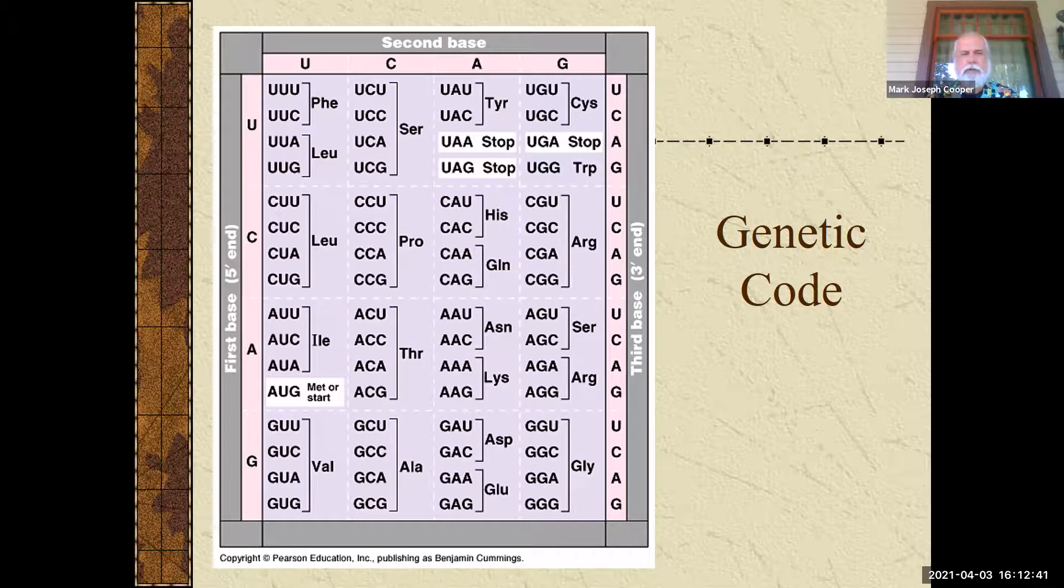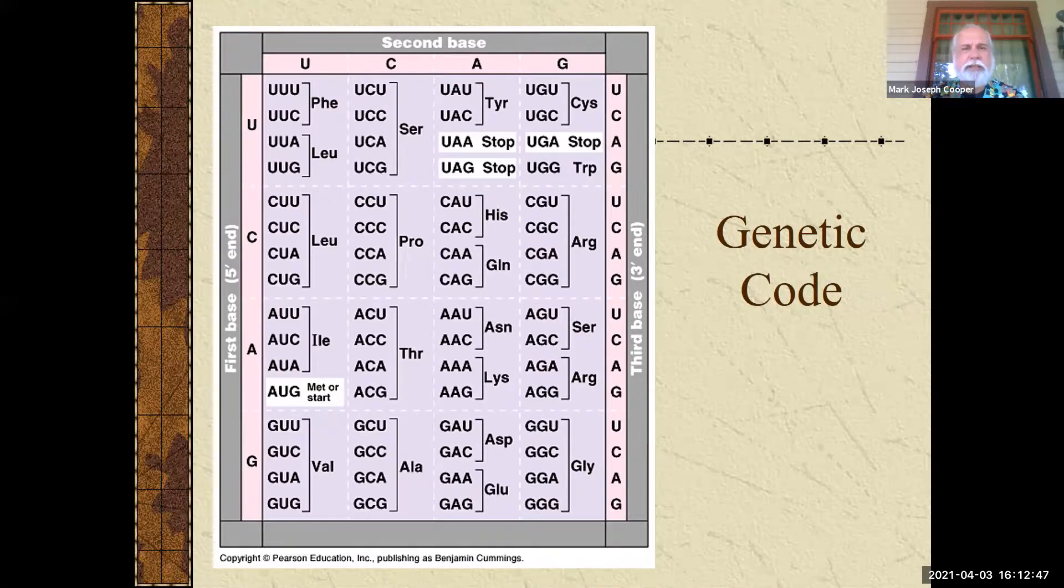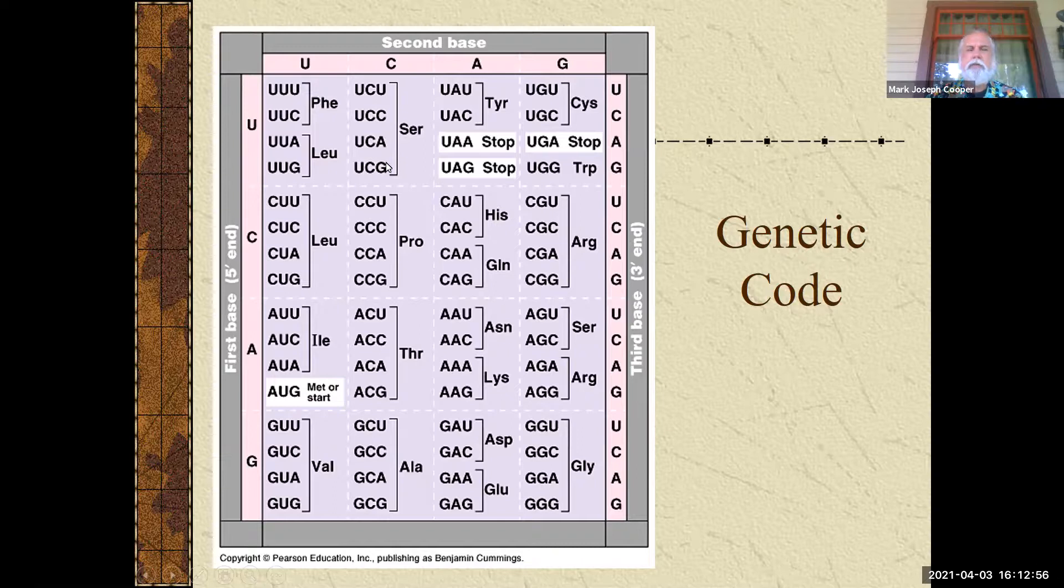Alright, what else do I need you to know? I also need you to know that if you look at this, there's something called wobble. And what you're going to find is that this third nucleotide is probably the least important. I'm not saying it's not important, but it's the least important of the grouping. Because like for serine, for instance, you can see with the UCU, C, A, and G on the end there, it doesn't matter. UC and whatever it is, is going to give you the same amino acid. We call this wobble.